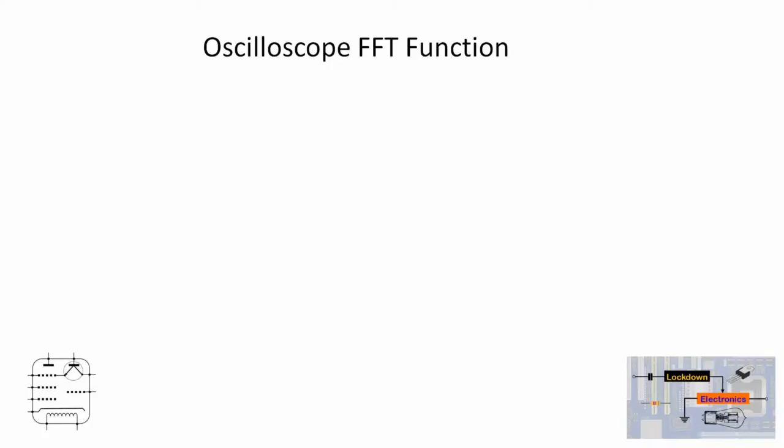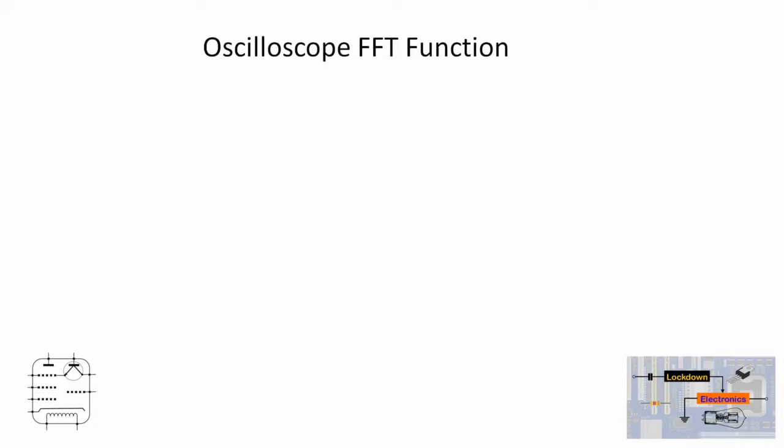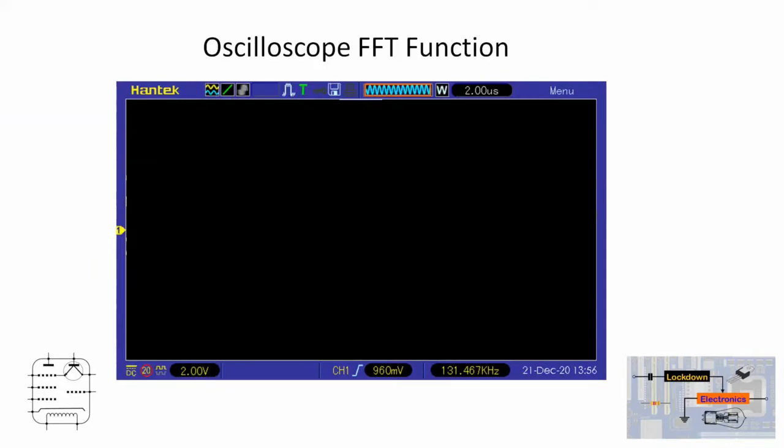So let's go and look at some waveforms. Let's just have a look at the FFT function the oscilloscope produces. A conventional oscilloscope has a display that essentially displays voltage against time and displays it as a graph, and that's the waveform that we're all familiar with.